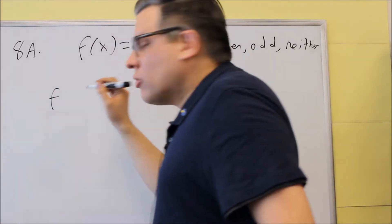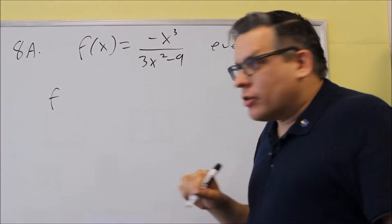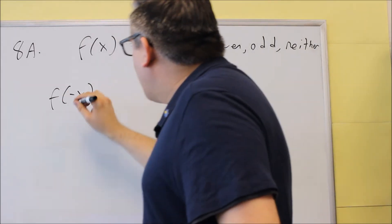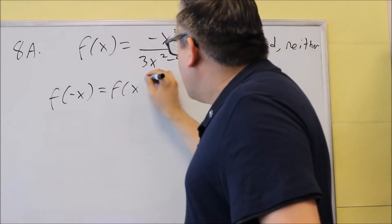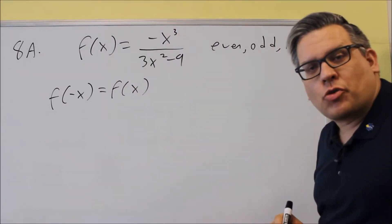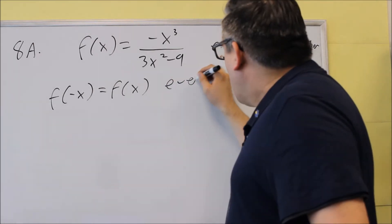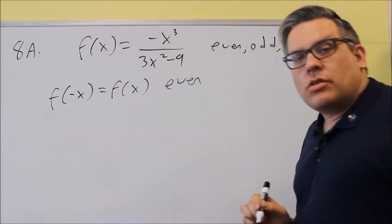So, here's the rules for even, odd, or neither. If you put a negative x into the function and the result is you get exactly the same function as what you started with, we say that that's going to be even.